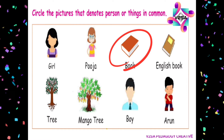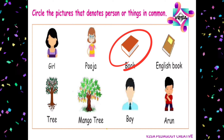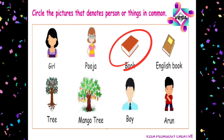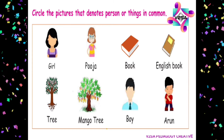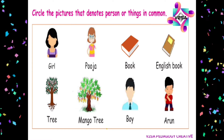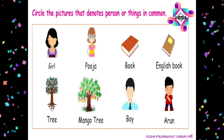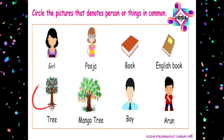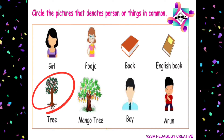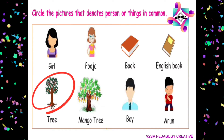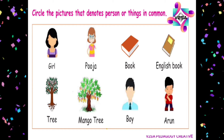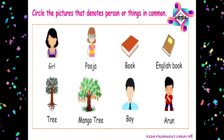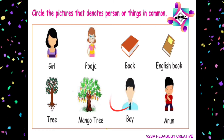Book — book is a common noun. Mango tree — mango tree is a common noun. Boy — boy is a common noun.